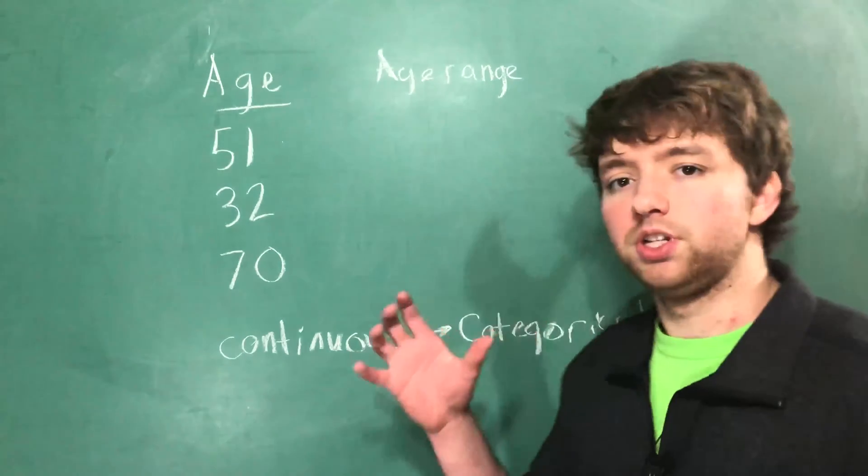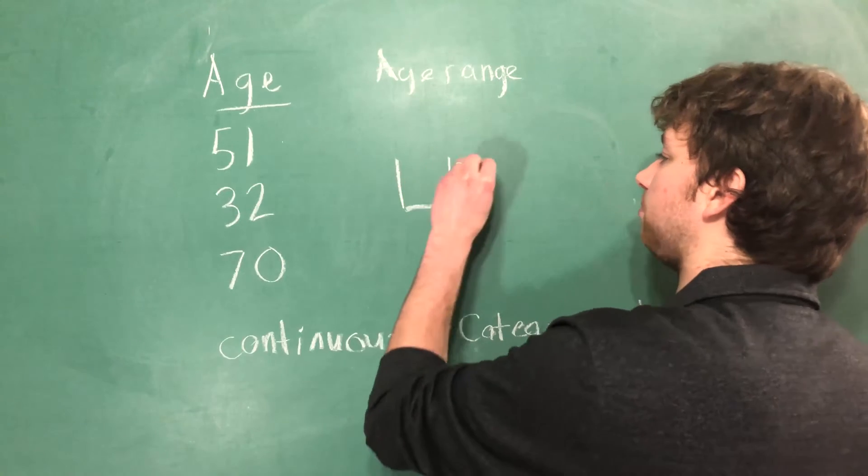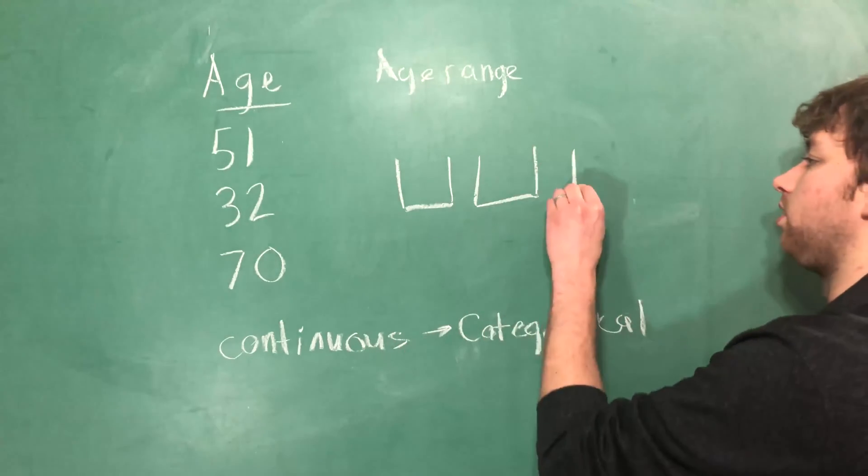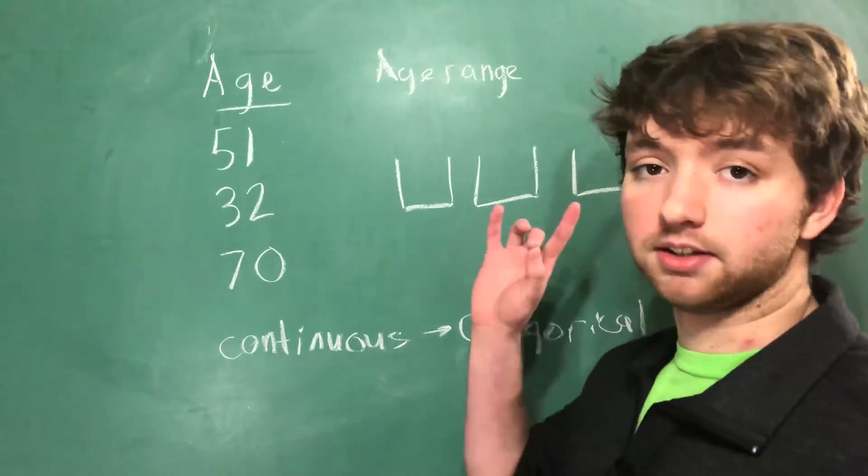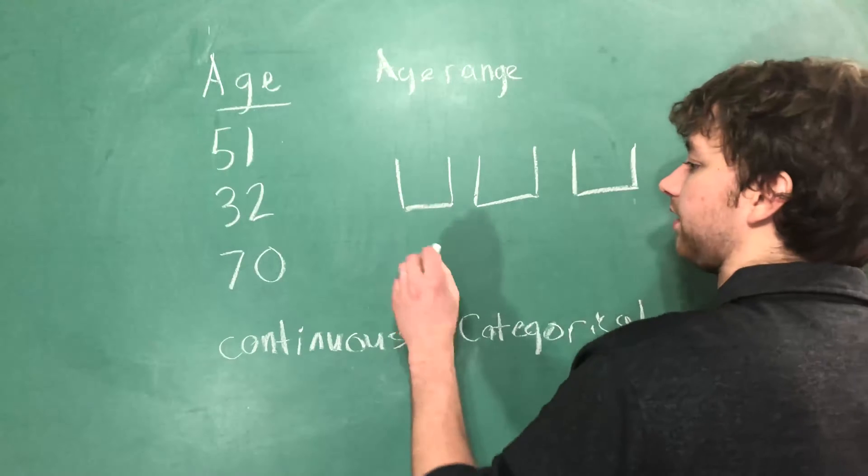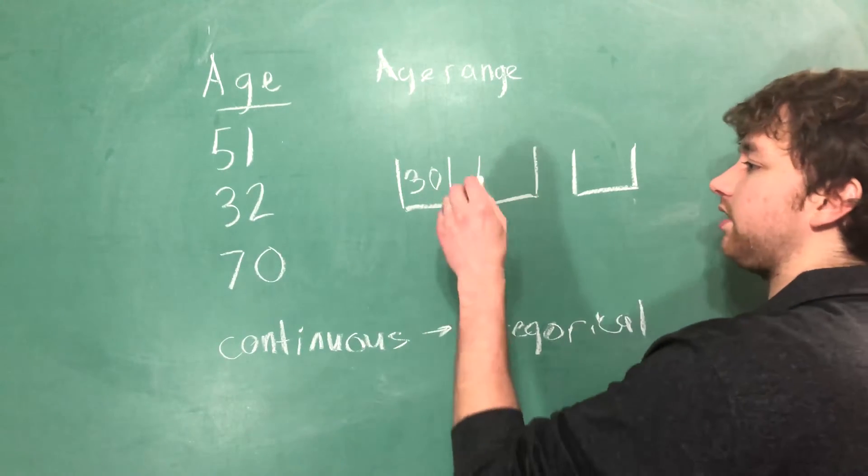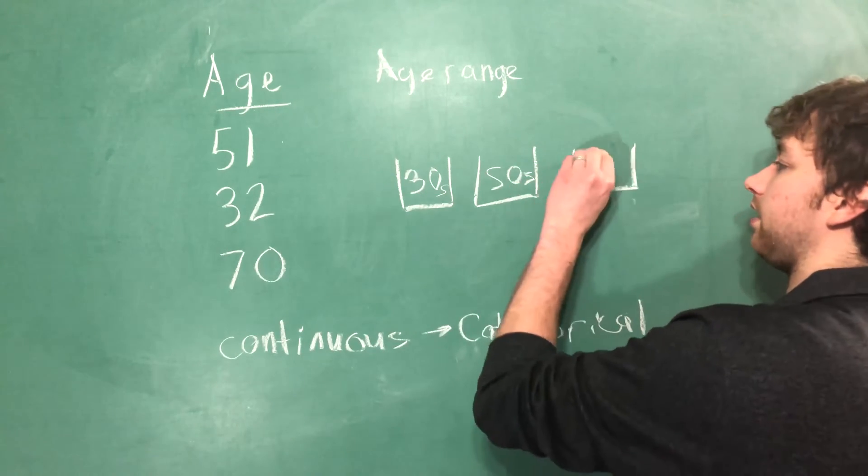So essentially you can think of having multiple bins and you can label bins by some grouping. The grouping is totally up to you but let's say we group these in tens. We might have 30s, 40s, 50s, 60s, and 70s.